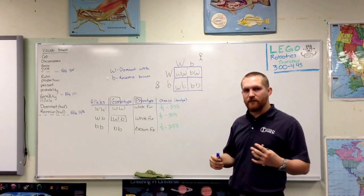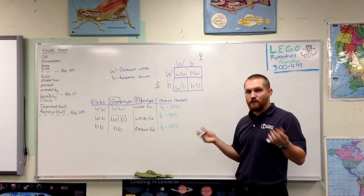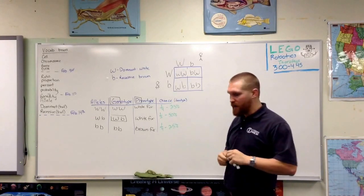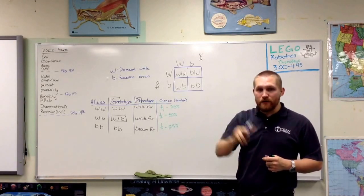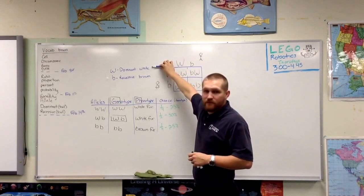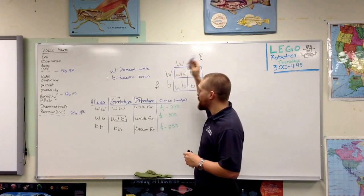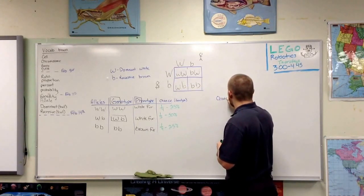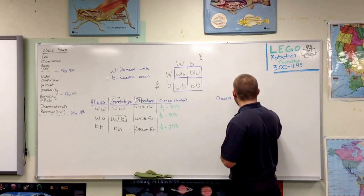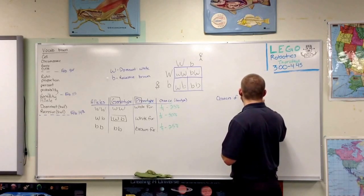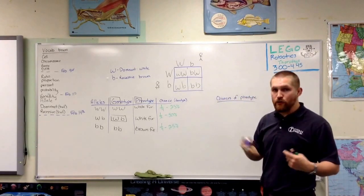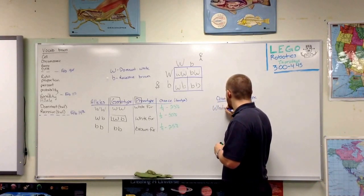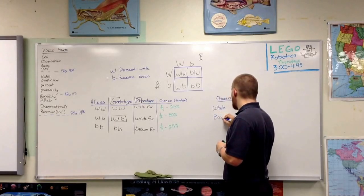What we can also look at is what are the chances of a different phenotype, because that's a lot of cases what we care about — I want to know what is my phenotype going to be: blue eyes, blonde hair, all that kind of stuff. There are only two different phenotypes here: a bunny can be white or brown. Phenotypes are our physical characteristics.